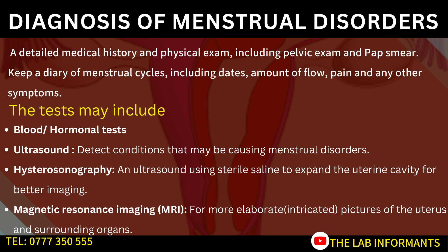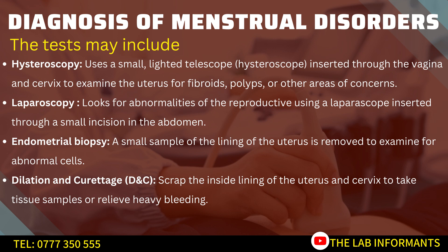To diagnose menstrual disorders, a doctor may order blood tests or hormonal tests, as well as an ultrasound to detect conditions causing the disorder. A hysterosonography — an ultrasound that uses sterile saline to expand the uterine cavity for better imaging — may also be ordered, along with an MRI for clearer pictures of the uterus and surrounding organs. A hysteroscopy, an office procedure using a small lighted telescope inserted through the vagina and cervix, can examine the uterus for fibroids, polyps, or other areas of concern.